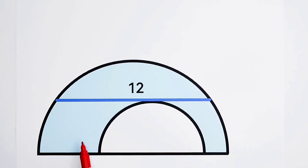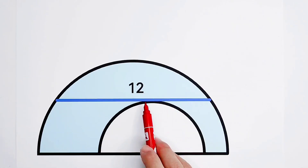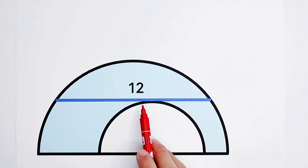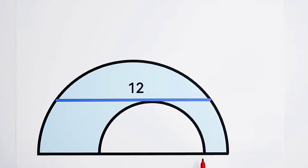Here are two semicircles. This chord, measuring 12, is parallel to the diameters and tangent to the small semicircle. So what's the area of the shaded region?